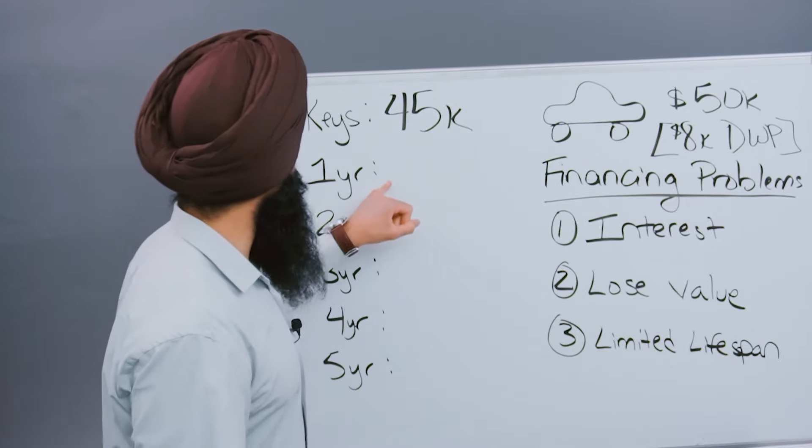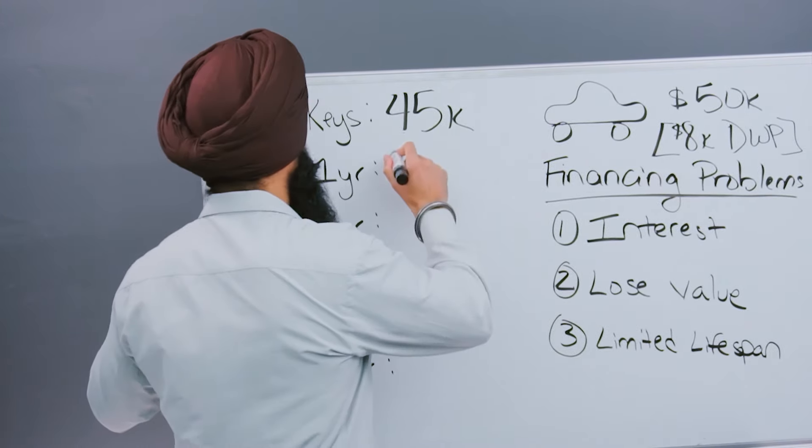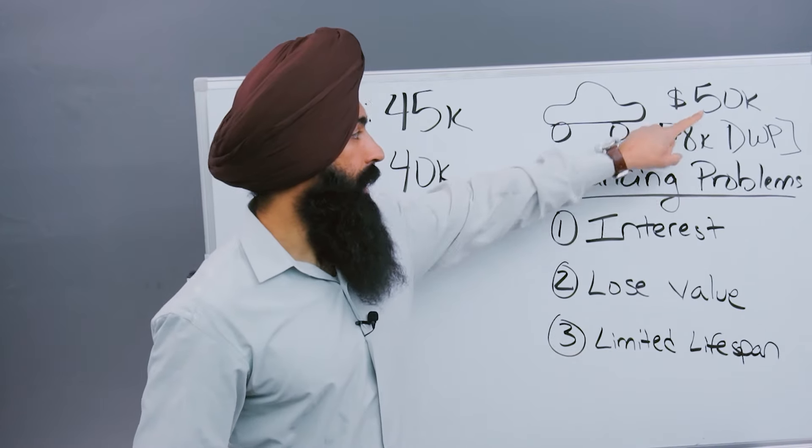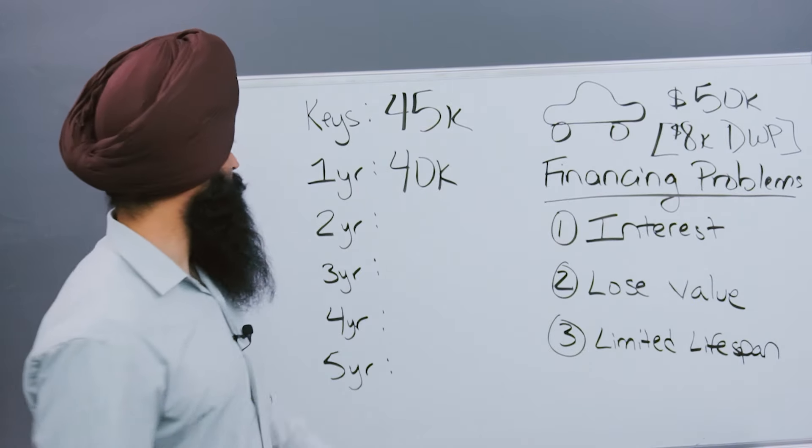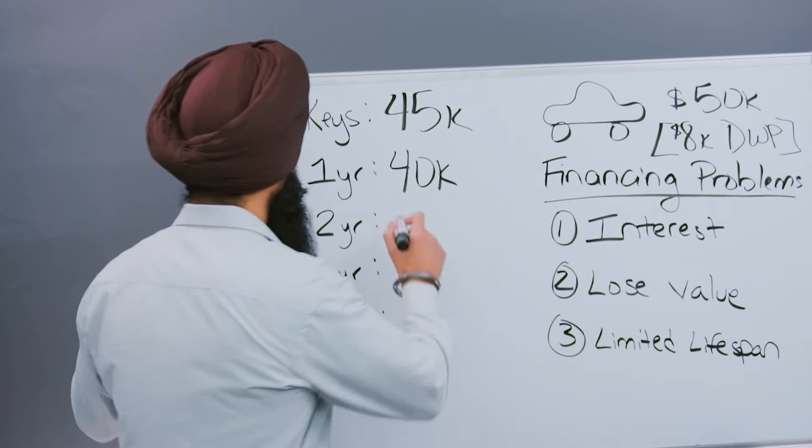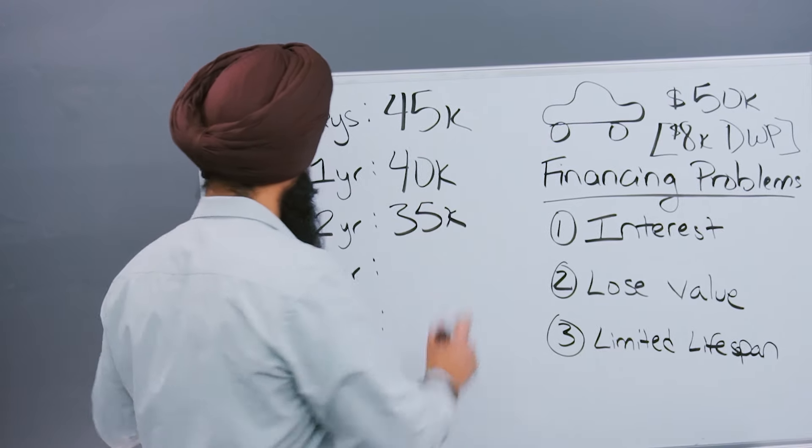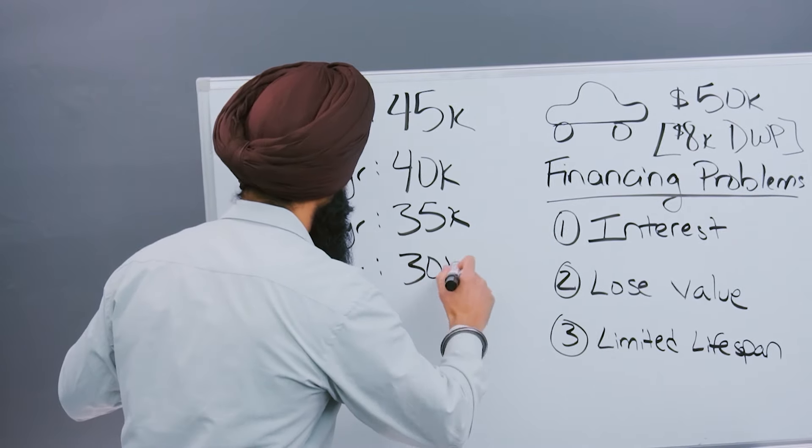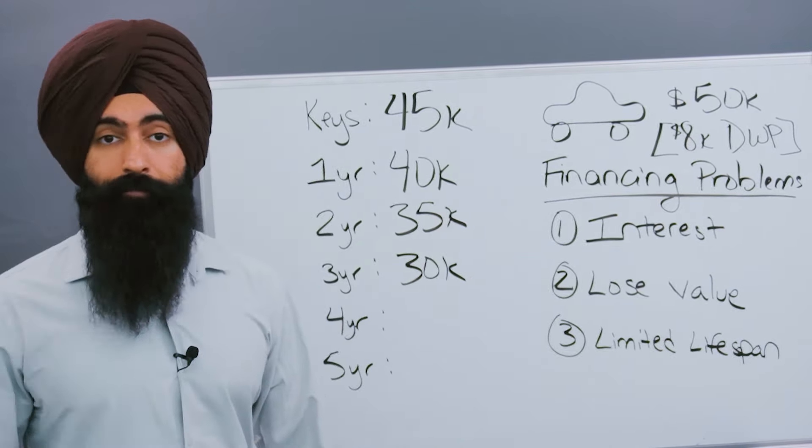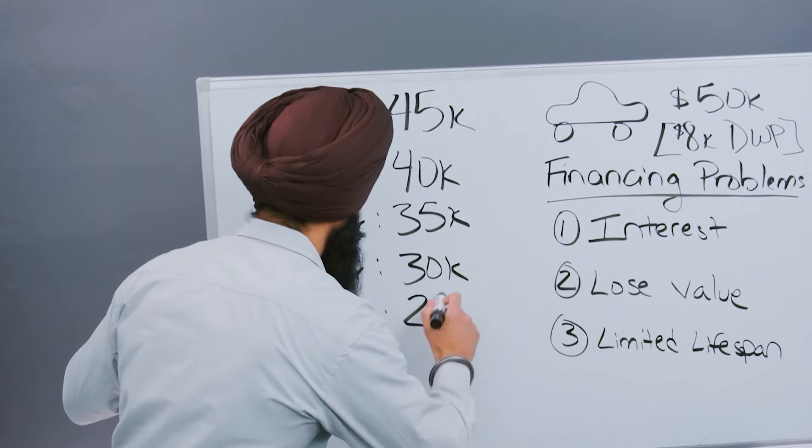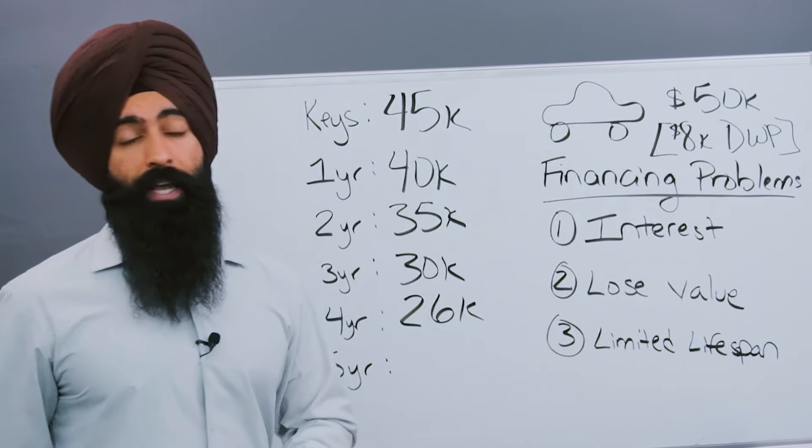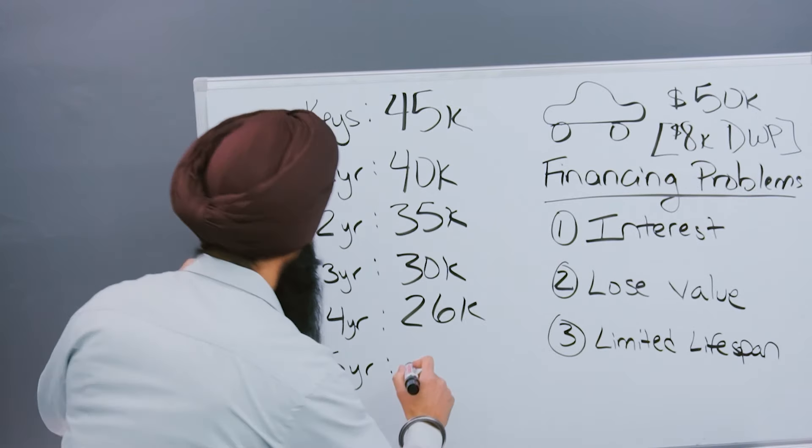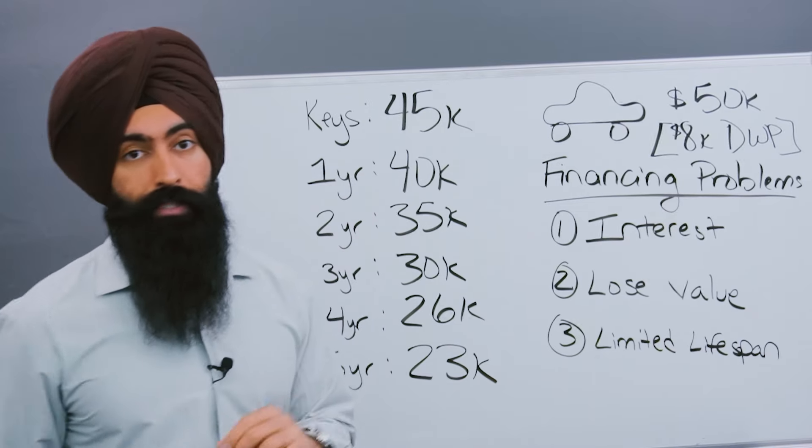And then after one year, this car is going to be worth around $40,000, about $10,000 less than what you bought it for. And remember, you're financing $42,000. After two years, this car is going to be worth around $35,000. After three years, this car is going to be worth around $30,000. After four years, this car is going to be worth around $26,000. And after five years, when you finally pay this car off, it's going to be worth around $23,000.